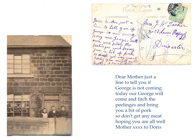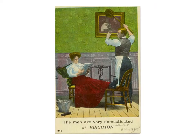The text says: 'Dear Mother, just a line to tell you, if George is not coming today, our George will come and fetch the peelings and bring you a bit of pork. So don't get any meat. Hoping you are all well, Mother. Kiss, kiss, kiss to Doris.' We can see that the message is about something happening later that day — what we would use a text message for now. This card is unusual in that there are some misspellings; generally spellings are very standard. Regarding the 'kiss, kiss, kiss to Doris,' I kind of wonder if it was a little child at home who's done the scribbles on the card — but obviously we'll never know that.